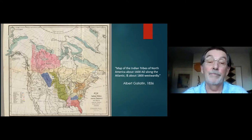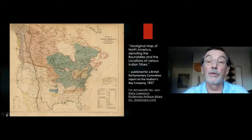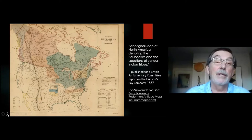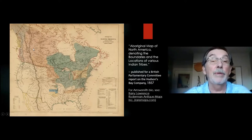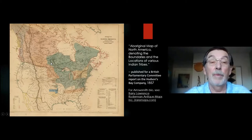What is unique about this map is it is probably one of the first ones that uses color. This is another map, an Aboriginal map of North America, denoting the boundaries and locations of various Indian tribes, as its title, produced in 1857, just prior to the Hudson's Bay Company losing Rupert's Land and prior to the colony of British Columbia being formed. Again, color — there are no hard boundaries shown; the colors act as boundaries. It's quite an attractive map.